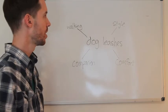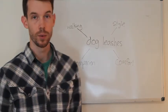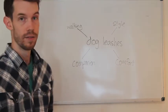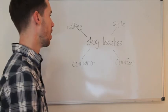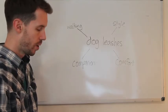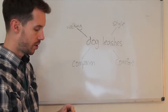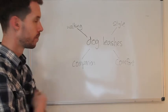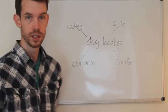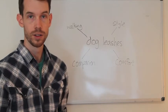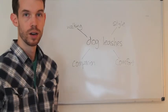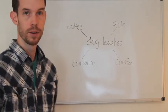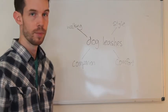So the first step, you want to start with what I call a mind map — a lot of people call it that, I didn't invent that. We have a pretend product I'm going to use today: dog leashes. Let's say you sell dog leashes. It's kind of an easy one — some ideas probably come to mind right off the bat.